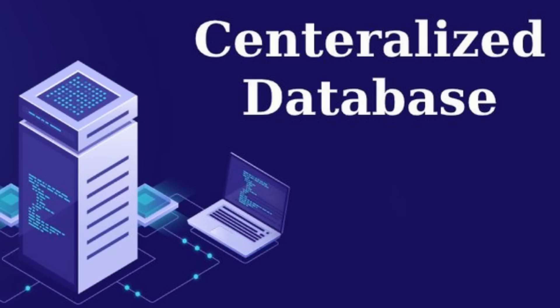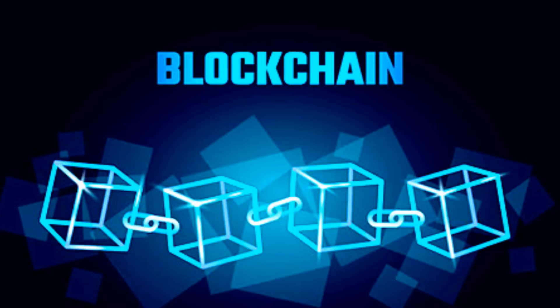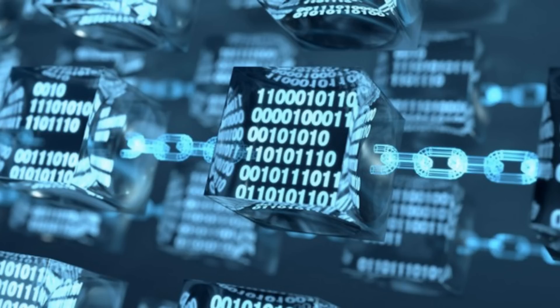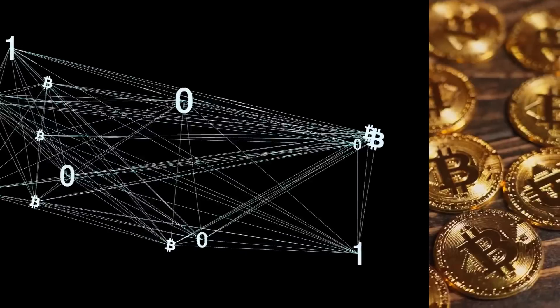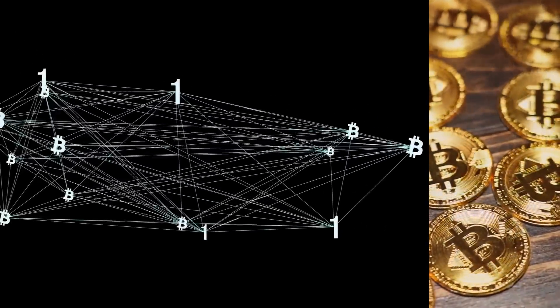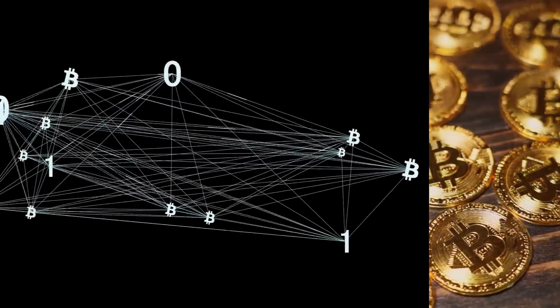To overcome these trust issues, blockchain is used to maintain the database. The stored data is shared with everyone on the network and it becomes nearly impossible to alter or modify it. Blockchain research started in 1990 but it was implemented in 2009 by Satoshi Nakamoto, an anonymous developer. He made Bitcoin cryptocurrency with the help of blockchain.